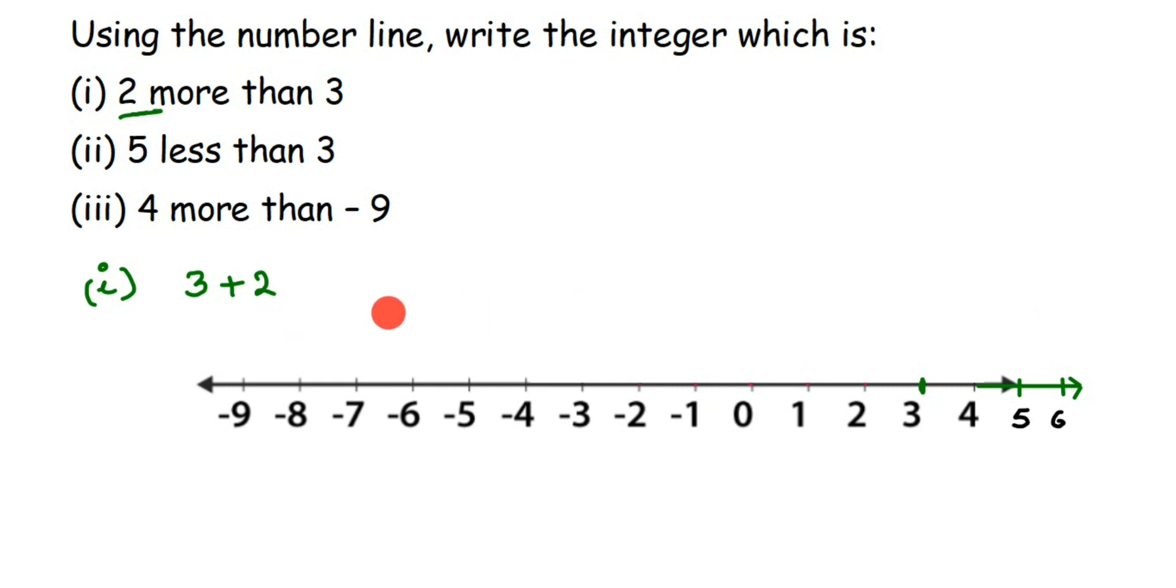Now we have 2 more than 3. So 3, whatever we have, we have to add 2 more to it. So here we want to locate 3. 3 is here, right? 3 is present here. So we're adding 2 to it. So when you're adding it you should go towards the right side.